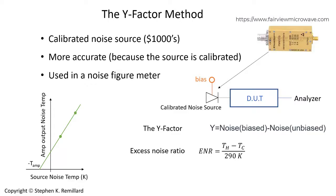The Y factor is a difference in the measured noise when the calibrated source is biased versus unbiased, which is essentially the excess noise ratio, the difference in the hot and cold temperatures of that calibrated noise source divided by the ambient temperature which is referenced to 290. And from that the noise figure can be calculated. That's the method that noise figure meters use and that you may wish to use if you want to make an investment in a calibrated noise source.